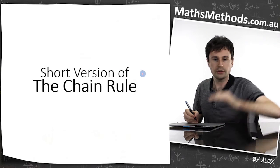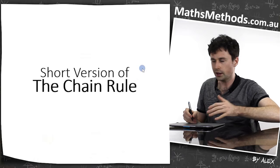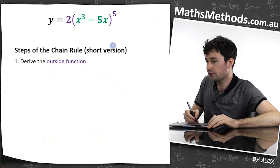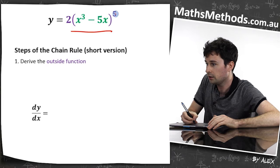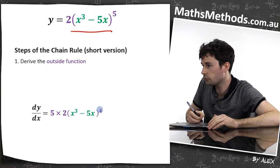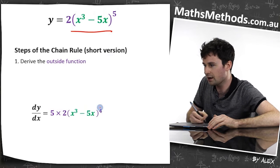So a short version of the chain rule. I don't think in all those steps, I just think in two steps. First one is derive the outside function. dy/dx, we look up here, okay, five times two is 10, five times two, and minus one from the power to four. Okay, I have to derive the outside function.